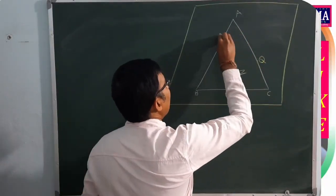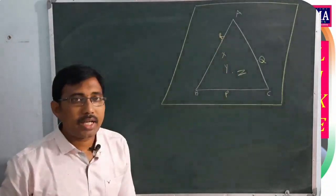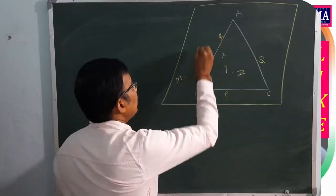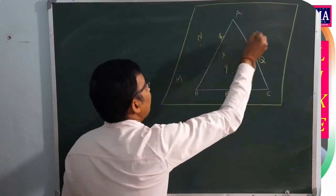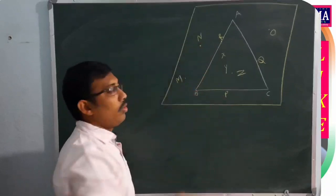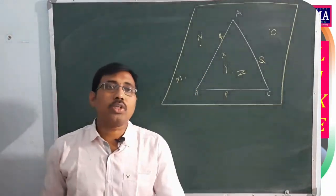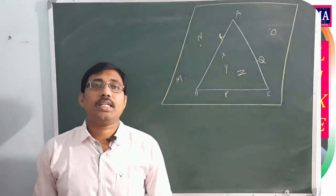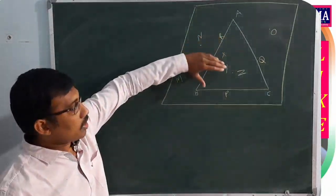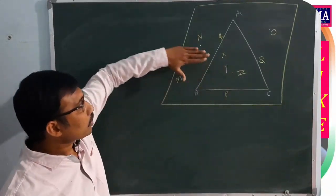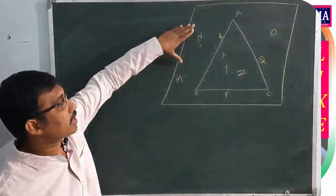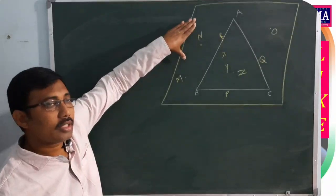Points P, Q, R are on the sides of the triangle. The third set is the exterior points M, N, O — these are the exterior points of the triangle. So, any triangle divides the plane into three parts: the interior, the points on the triangle itself, and the exterior.